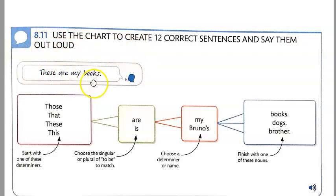So the first one is done for you. You take one word. Start with one of these determiners. Then one of these. Choose the singular or plural of to be to match. So this has to match this. Choose a determiner or name, my or Bruno's. And finish with one of these nouns, books, dogs, or brother. The first one is done for you. It's, those are my books. Now make 11 more sentences.